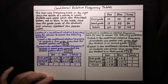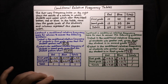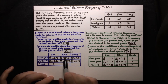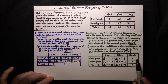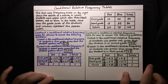Looking back, these conditional relative frequency tables seemed intimidating at the beginning, but it's really simpler than it seems. To get a conditional relative frequency table for columns, you just divide each column by its column sum. And to get a conditional relative frequency table for rows, you just divide each row by its row sum.